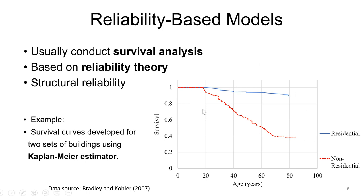Here's an example showing two survival curves developed using the Kaplan-Meier estimator, showing what percent of buildings will survive over zero to 100 years. The residential building (blue/solid curve) outperforms the non-residential building (dashed curve). In the early 20 years, both survive well. But by year 50, almost 50% of non-residential buildings are expected to fail.